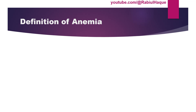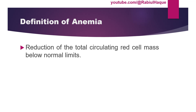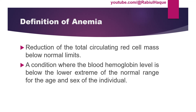First question: how can we define anemia? It can be defined as a reduction of total circulating red cell mass below normal limits. We can also define anemia as a condition where the blood hemoglobin level is below the lower extreme of the normal range for the age and sex of the individual. In anemia there is reduction in total circulating red blood cell mass, and since red blood cells are responsible for carrying oxygen throughout our body, there will be reduction in oxygen carrying capacity, leading to tissue hypoxia.